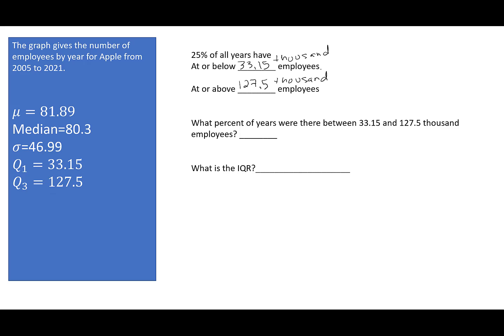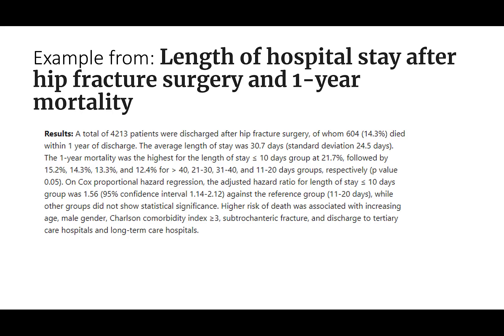What percent of the years were there between 33.15 and 127.5 thousand? Well, it says percent. You can see this was Q1 to Q3. So this is 50% of the time. And then the IQR is when I subtract Q1 and Q3, which is 94.35.